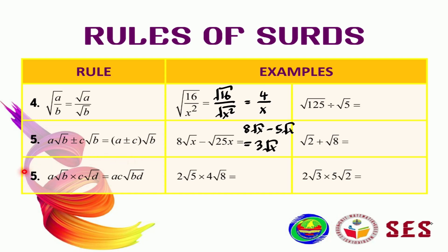Now let's look at the last rule, number 6. The last rule is about multiplication for sets. Generally, we multiply numbers with numbers and sets with sets. So 2 multiplied by 4 becomes 8, and square root of 5 multiplied by square root of 8 becomes square root of 40. Then we simplify square root of 40 to get 8 multiplied by 2 square root of 10, giving a final answer of 16 square root of 10.